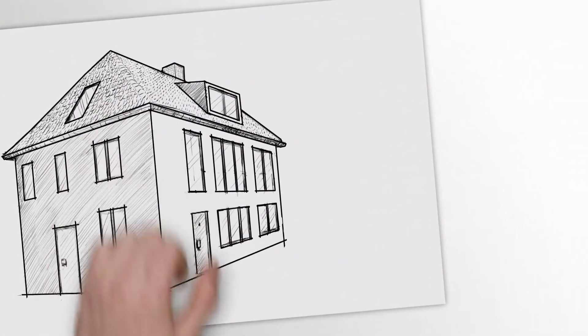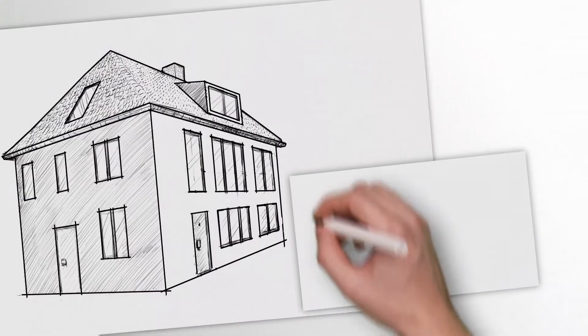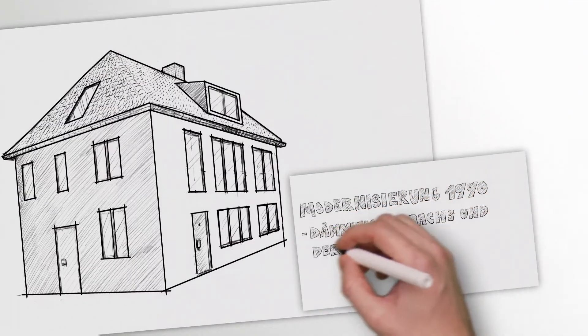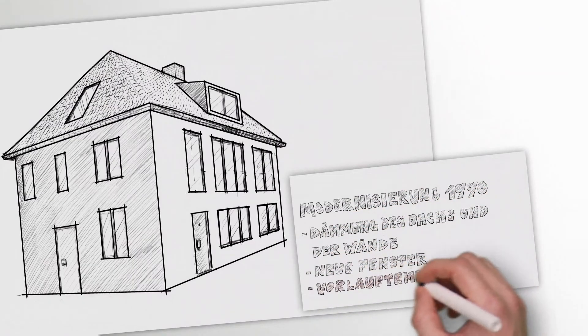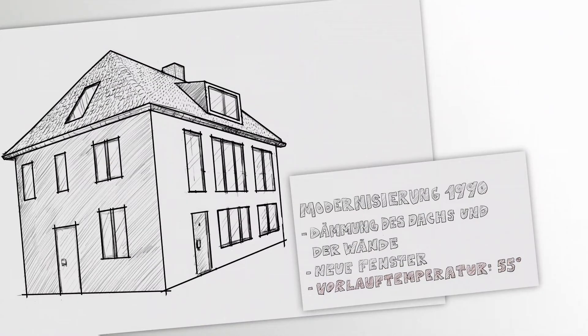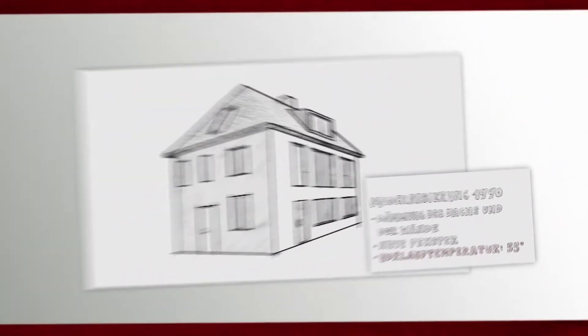The modernization of the property in 1990 has already improved things. The required flow temperature is now 55 degrees. At this temperature, a modern heat pump can work very efficiently, even with the existing heating distribution system.